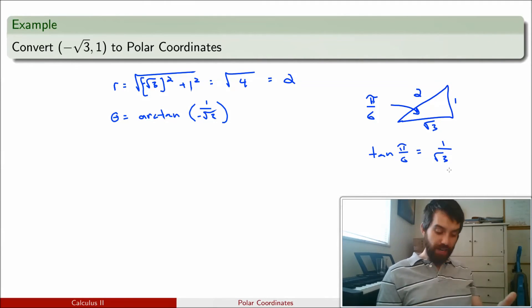And so, arctangent of 1 over square root of 3 is equal to pi over 6. The only problem is I've got this negative sign here. And so, my general answer for theta is that it is going to be equal to minus pi divided by 6.